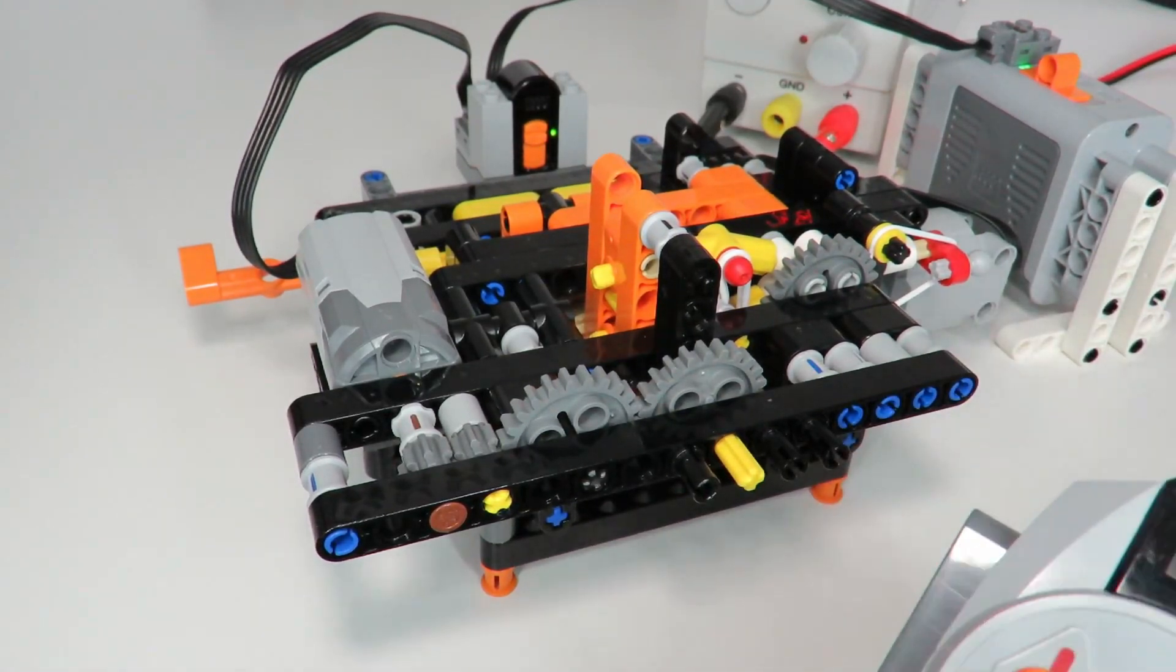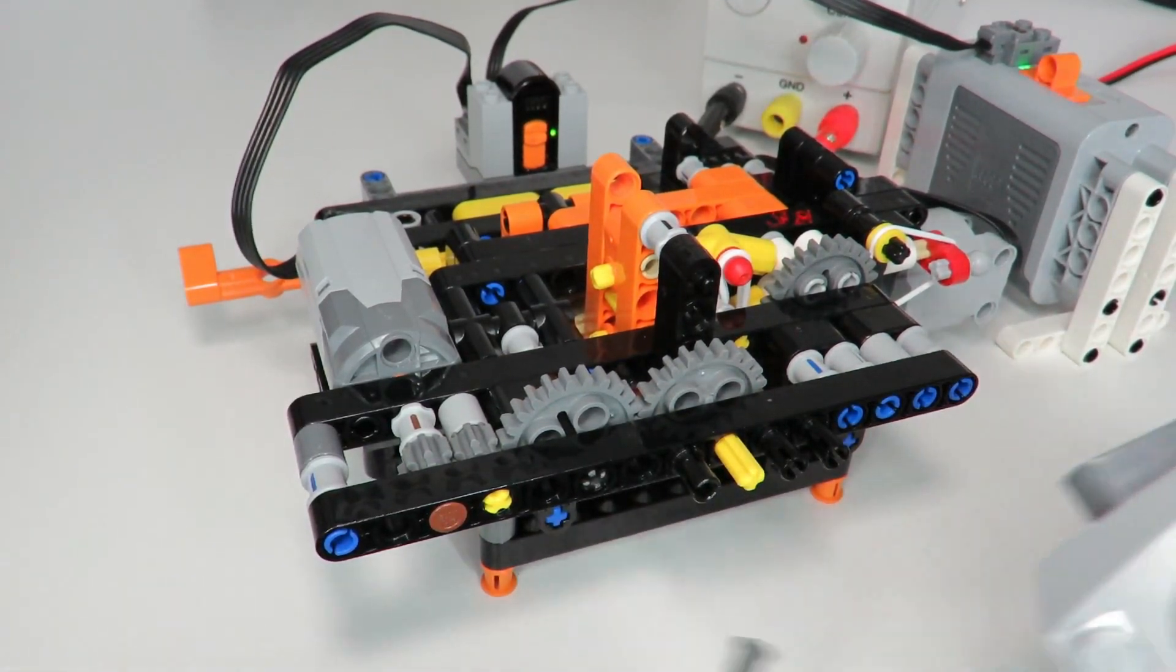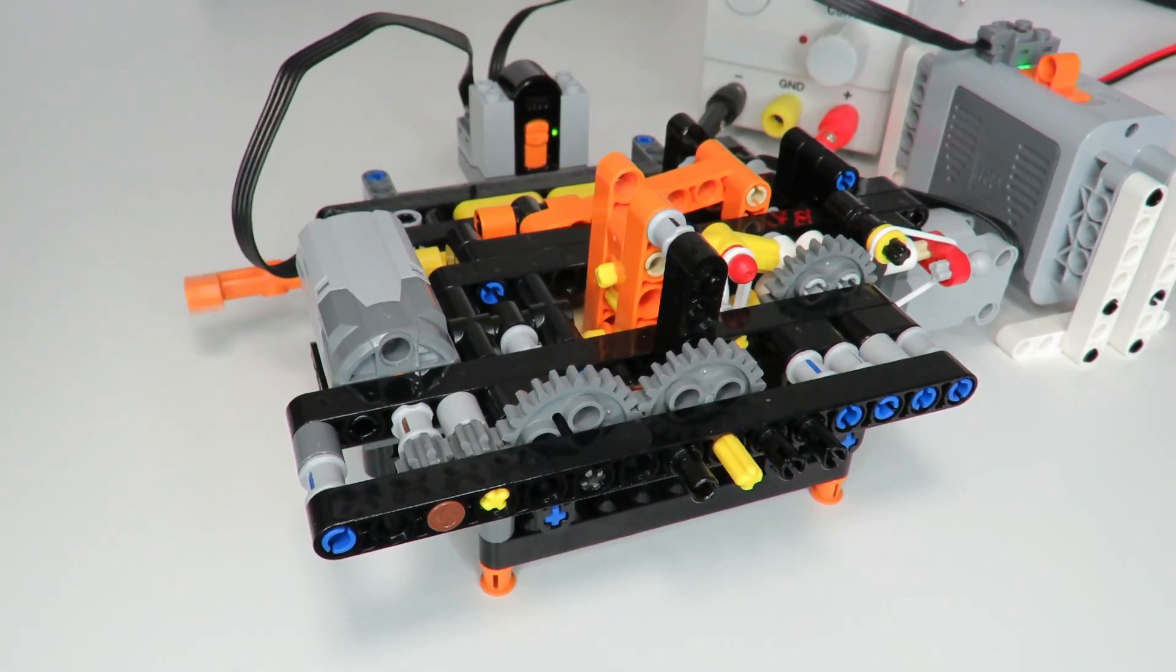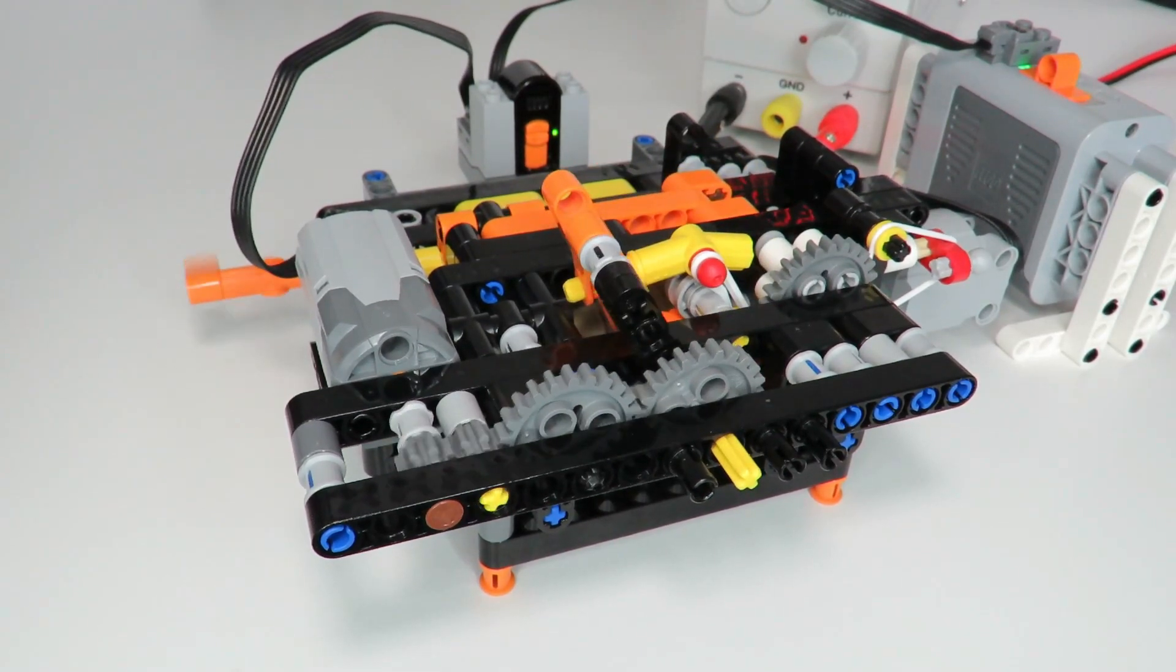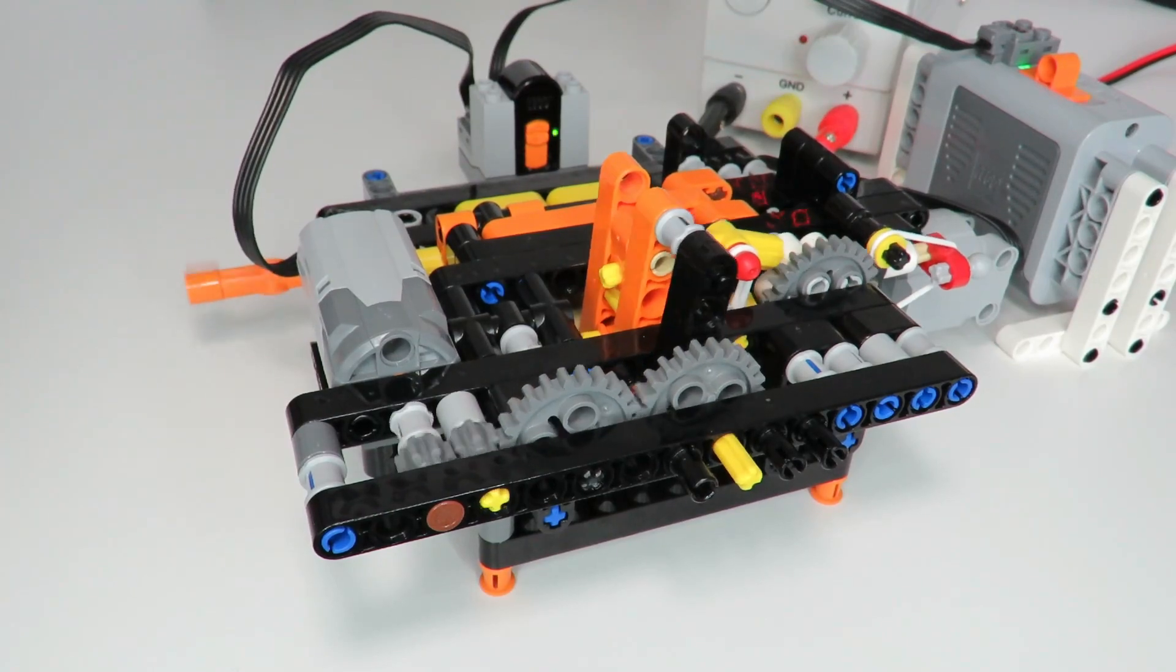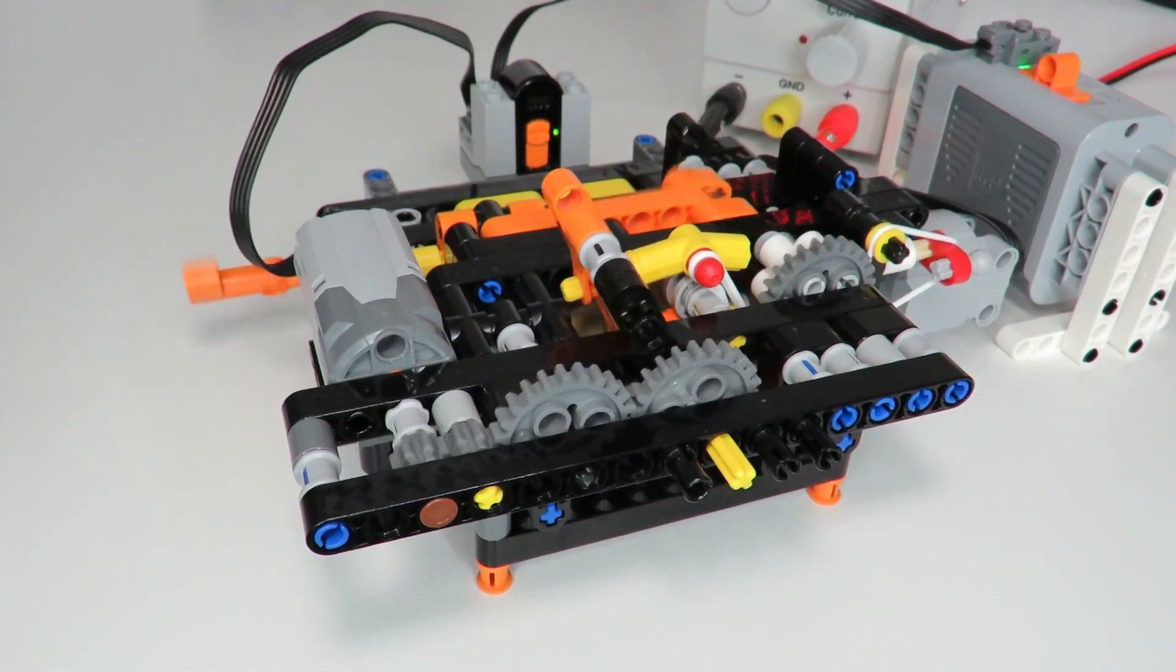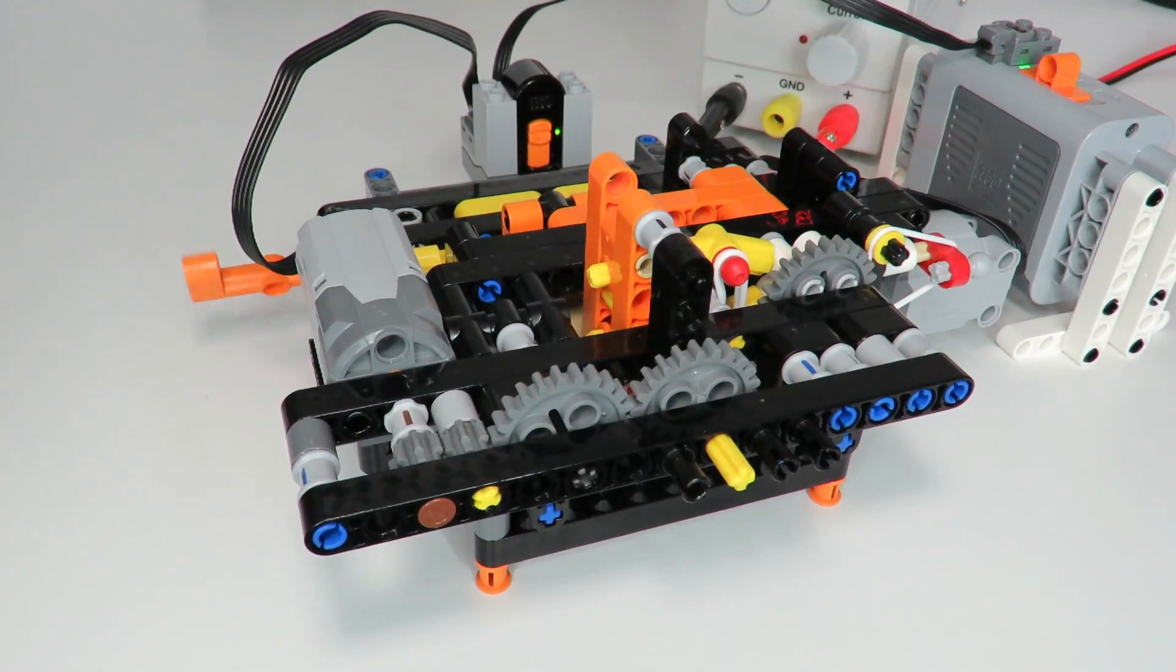And the output of the motor of the gearbox is on the left here so we can now turn on the main motor. So we are in gear one, we will now shift to gear two, faster, finally gear three, faster. Gear two, gear one, gear two, gear one, gear two, gear one.